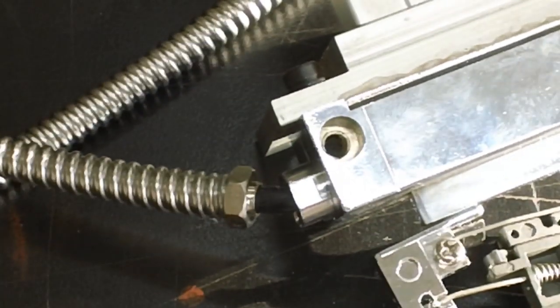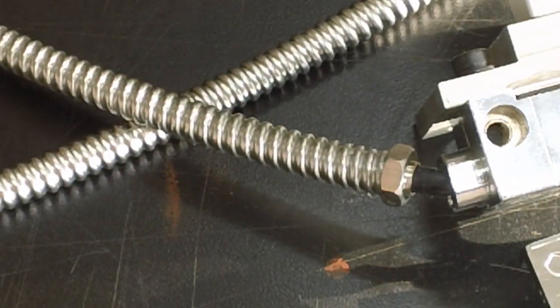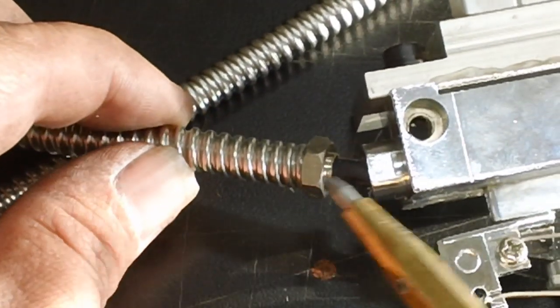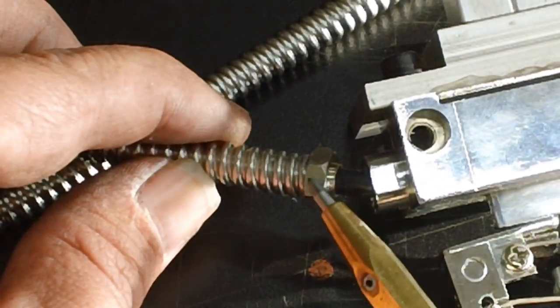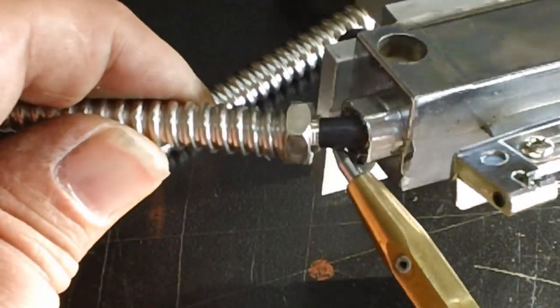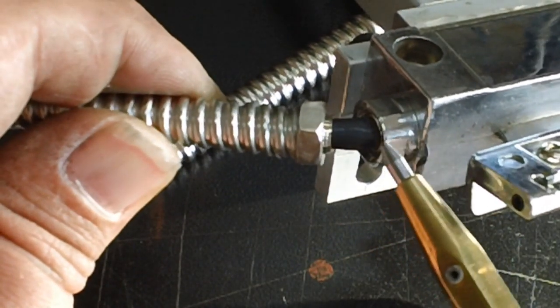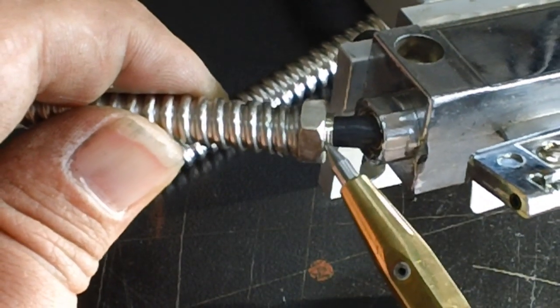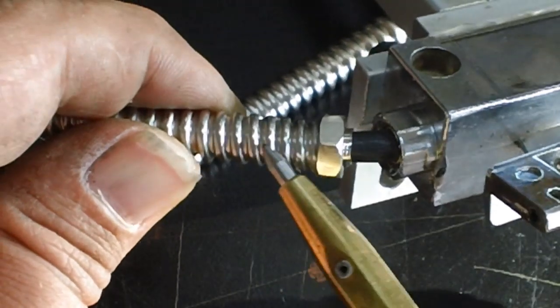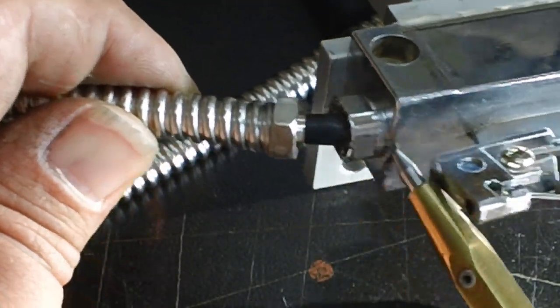And then on this other side over here, you can see that the threads for this nut right here are actually snapped off inside of there. So we've got to find a way to get that out and either remachine this and then reattach it to the shield, the armor.